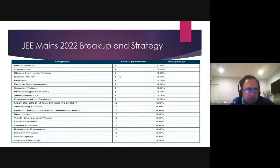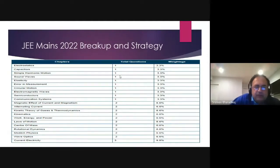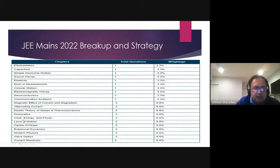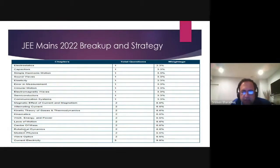Today I'm going to discuss only physics since this is a physics day. In class 11, you have simple harmonic motion, sound waves, elasticity, and error in measurement — these four topics are about 12%. Then you have kinematics, work-energy-power, laws of motion, center of mass, and rotational dynamics — these five topics are another 30%. So doing all of these will get you 30 plus 10 marks.